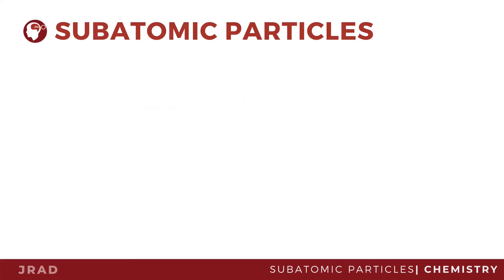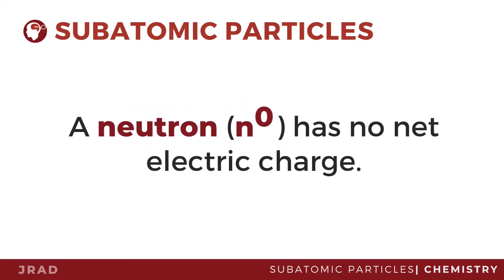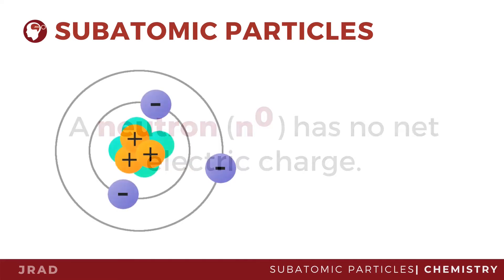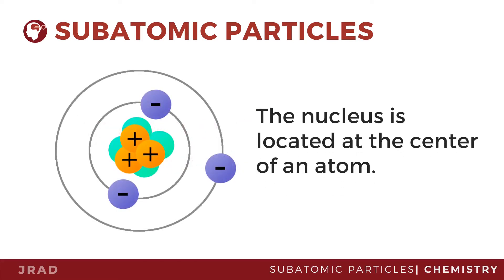A neutron has no electric charge, meaning it is neither positive nor negative. Both proton and neutron make up the nucleus of an atom, which is located at its center. Almost all of the mass in an atom is comprised of the protons and neutrons in the nucleus.